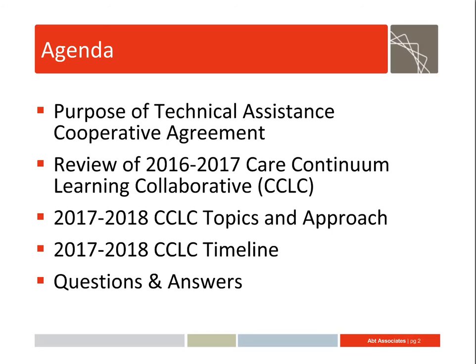So this is the agenda. We'll begin by talking about the purpose and some of the reasons behind the Technical Assistance Cooperative Agreement. We'll review what we did in 2016 and 2017, and then we'll talk about what we intend to do in 2017 and 2018 with respect to the topics and approach. We'll cover the timeline for the 2017-18 collaborative, and then we'll have time for some questions and answers.